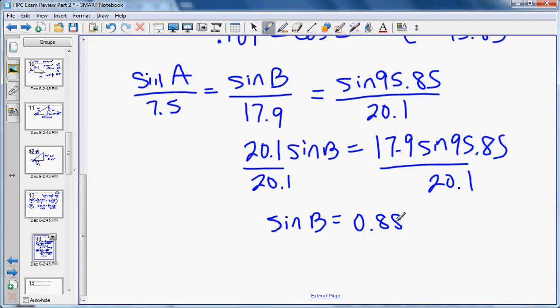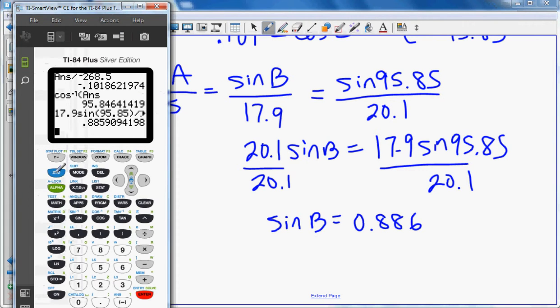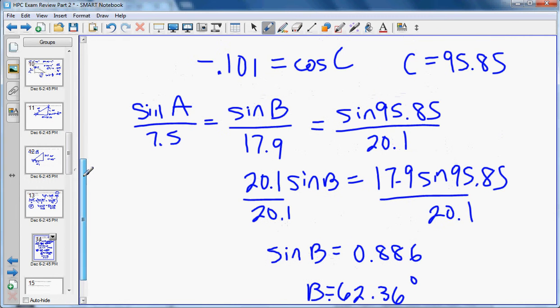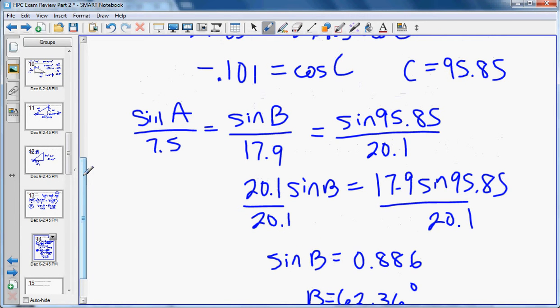So now we have two angles. We have B as 62.36, we have C as 95.85. So since we have two of the angles, the quickest way to solve for the last one is to subtract those two from 180. If we do 180 minus those two numbers, angle A equals 21.79 degrees. I know, those are long problems. Next ones are quicker.